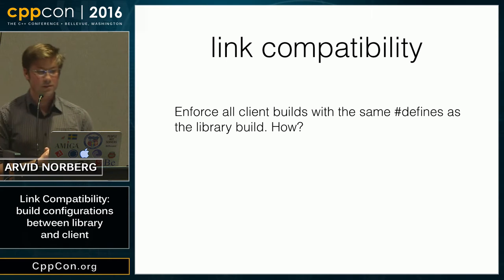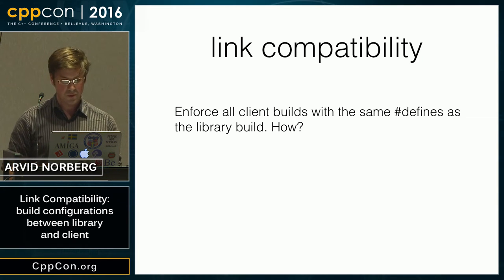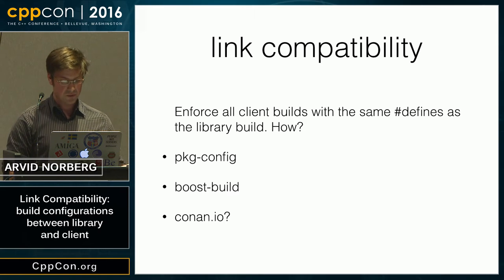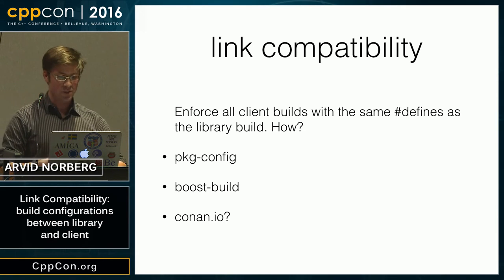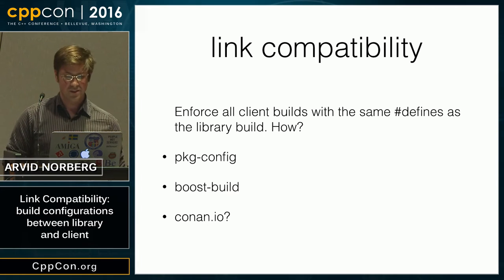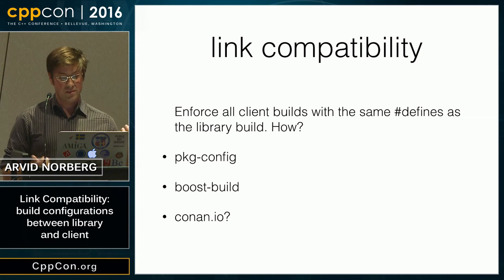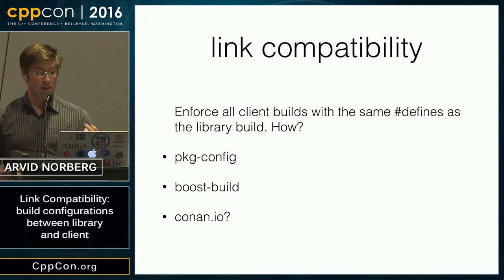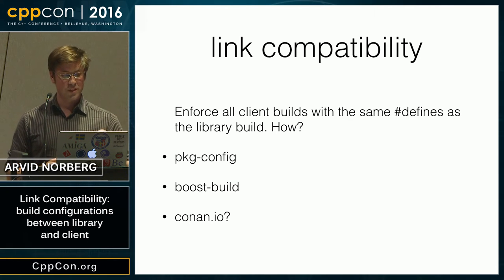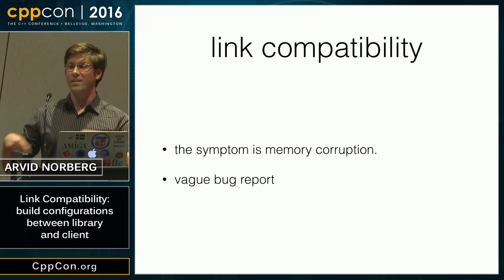So how do you force the client to have the same configuration as the library? There are a few solutions. There's PKG config. Boost build, surprisingly, has very good support for propagating requirements up the dependency graph. Conan, I learned this week, also has the ability to export sort of requirements. Turns out, not a lot of people use Boost build. My experience is that people only use PKG config after they've been bitten by this problem — the symptom is memory corruption. I get vague bug reports, figure it out, tell them, and then they use PKG config. So I want to remove myself from this sort of cycle.